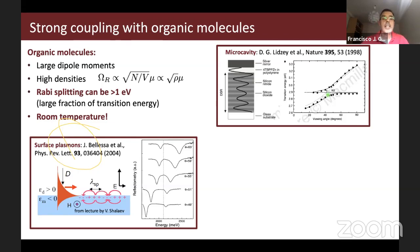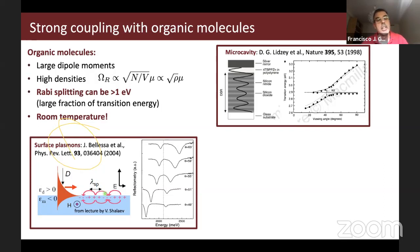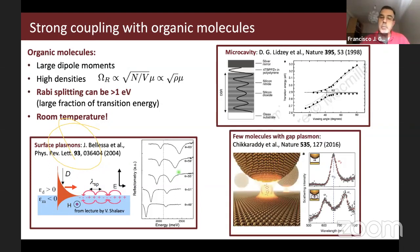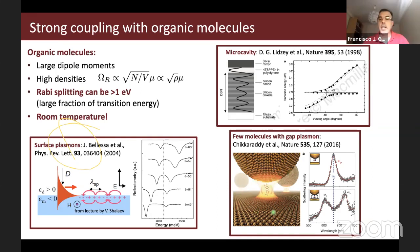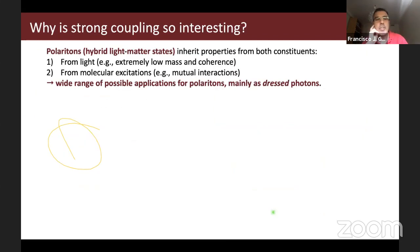A cavity doesn't need to be a closed cavity — it can be an open cavity. The only requirement for strong coupling is a localized electromagnetic mode. For example, a surface plasmon polariton can provide a localized electric field, and the group of Bellessa in Lyon demonstrated strong coupling with just an organic layer on top of a metal surface. More recently, the group of Jeremy Baumberg in Cambridge achieved strong coupling at the single quantum level by placing just a few molecules in the gap region between a metal nanoparticle and a metal surface.